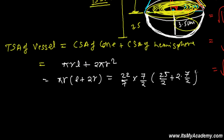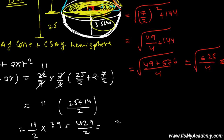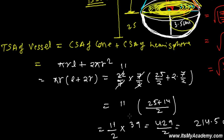After cancellation we get 11, and with common denominator 2: (25 + 14)/2 = 39/2. So it becomes 11 × 39/2 = 429/2 = 214.5 centimeters squared. So the total surface area of the toy is 214.5 cm².